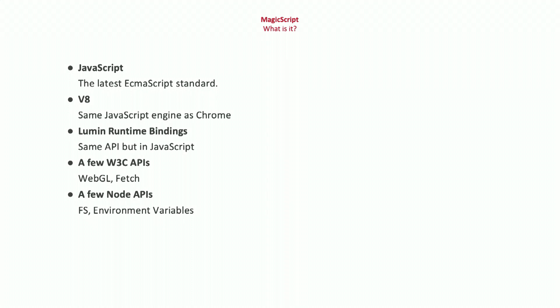We're using the latest ECMAScript standard for JavaScript, which is powered by V8 — the same JavaScript engine running in Google Chrome, developed by Google. To that, we add the Lumin runtime APIs as direct native bindings. Then we add some W3C APIs such as WebGL and Fetch, and we've also added some Node.js APIs to enable third-party NPM libraries.